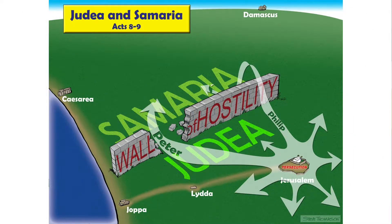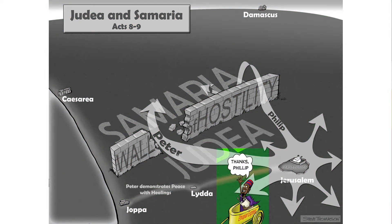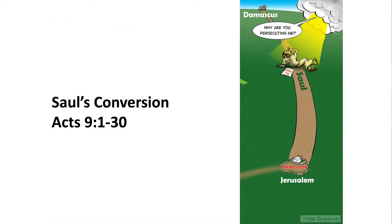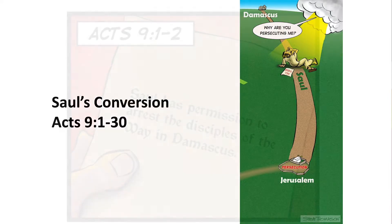Chapters 8 through 9 talk about how this persecution scattered the church into Judea and Samaria. Peter and Philip do their work. Last week in the Narrative Lectionary, we looked at the story of Philip and the Ethiopian eunuch. And then we come to Acts chapter 9 verses 1 through 30, which is the story of Saul's conversion.